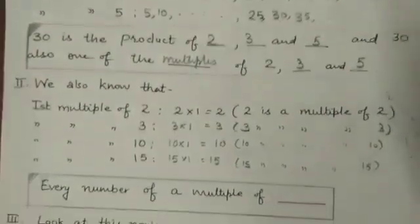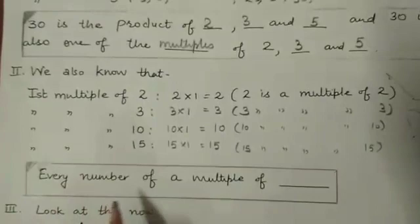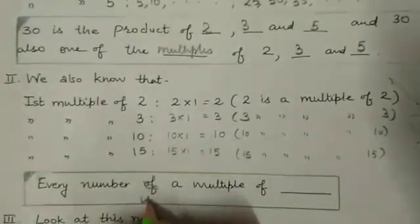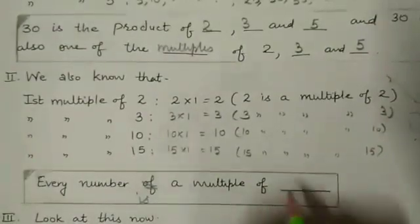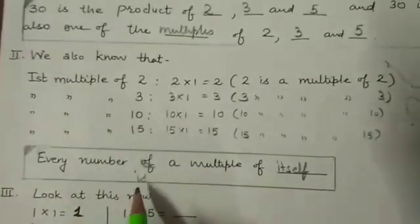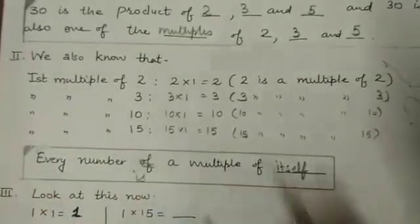So what does it mean? Every number is a multiple of itself.